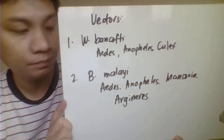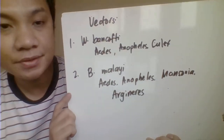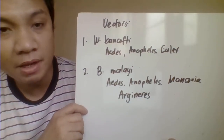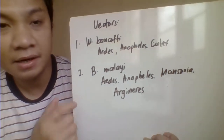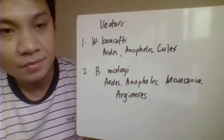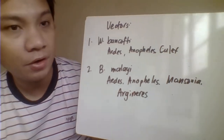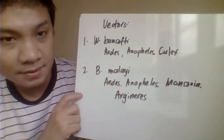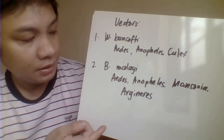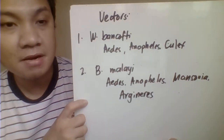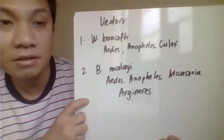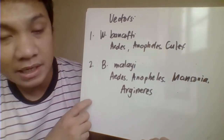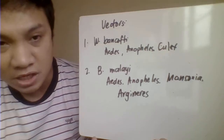Now we go to the vectors. For blood nematodes — Wuchereria bancrofti and Brugia malayi — the vectors are mosquitoes. For Wuchereria bancrofti, the mosquito genera include Aedes, Anopheles, and Culex. For Brugia malayi, transmission is also by mosquito bite, involving the genera Aedes, Anopheles, Mansonia, and Armigeres.